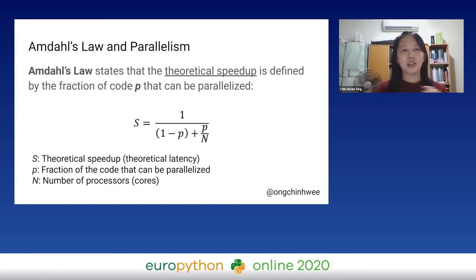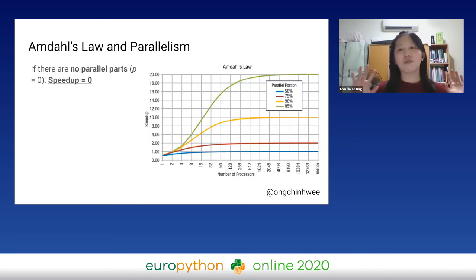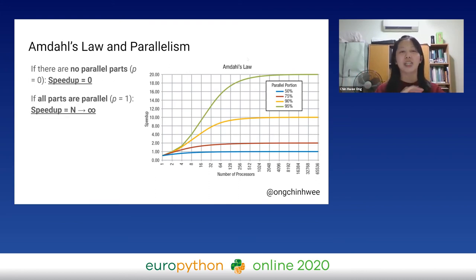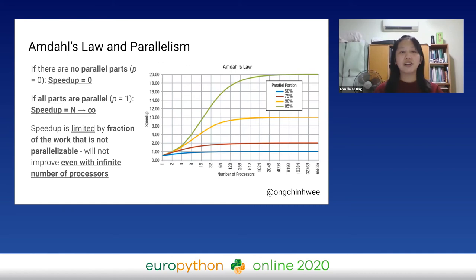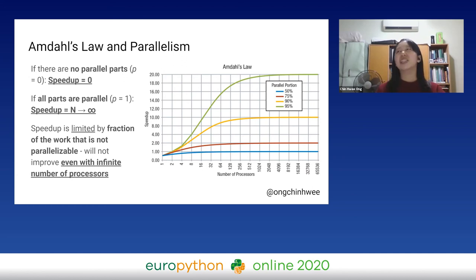Amdahl's law states that the theoretical speedup is defined by the fraction of code that can be parallelized. If there are no parallel parts, you have no speedup. If all parts are parallel, you have theoretically infinite speedup. But your speedup is limited by the fraction of work that is not parallelizable — for example, initialization cannot be parallelized. It would not improve even with an infinite number of processors.